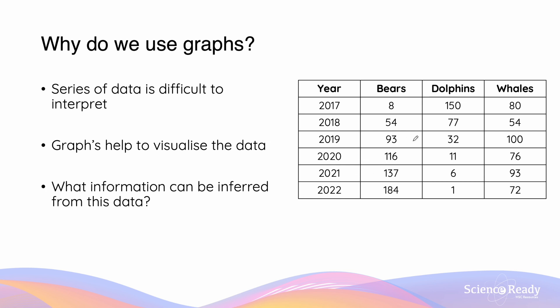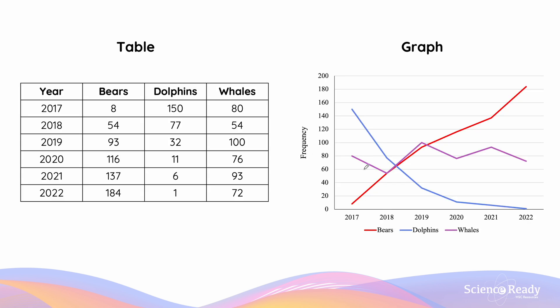For example, let's look at this data presented on the right hand side. This table can then be plotted onto a graph and it can look like this. As we can see, the year is plotted on the x-axis while the frequency is plotted on the y-axis. By plotting these points in, what we notice is that the population of bears is increasing while the population of dolphins is decreasing and the whales is mostly unchanged.